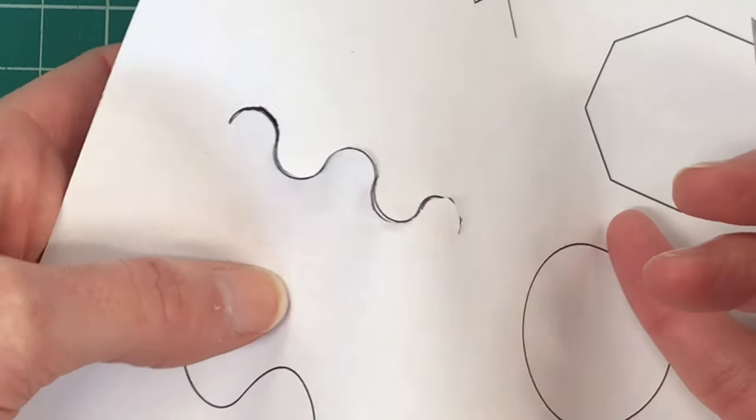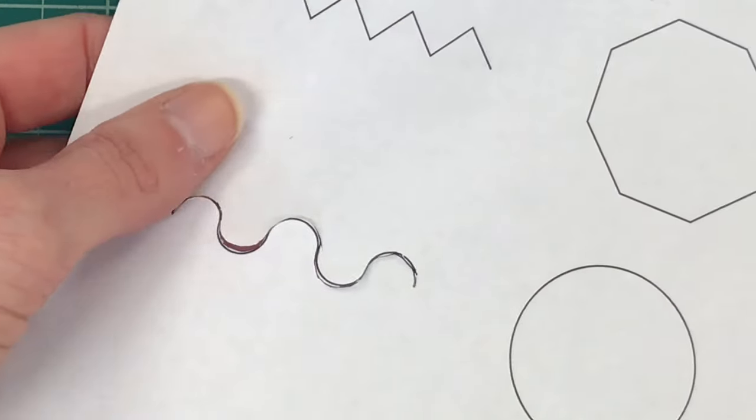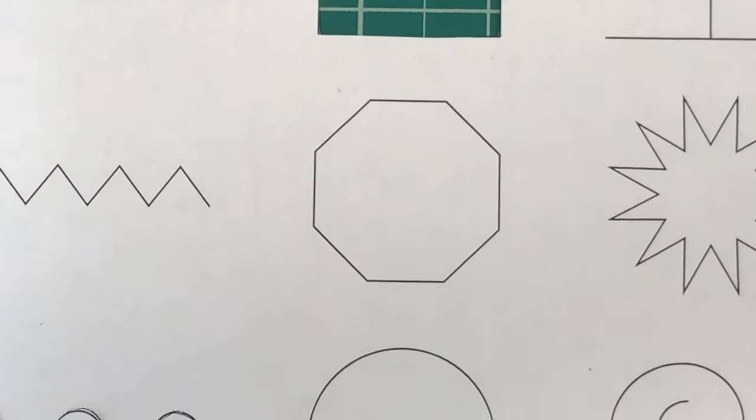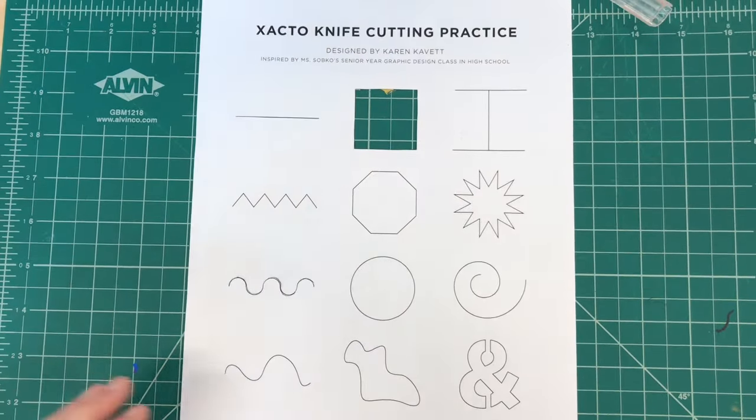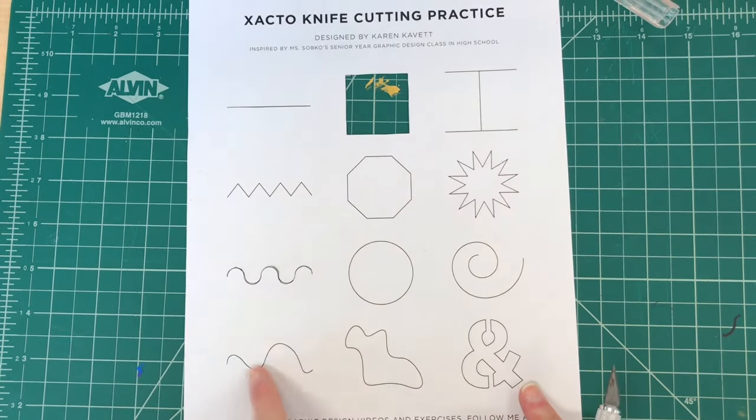By the time you work through all the exercises on this worksheet you are going to be a master cutter with craft knives. Make sure you work from top to bottom. The most challenging exercises on the worksheet do come at the bottom, like that and sign. Good luck with that one.